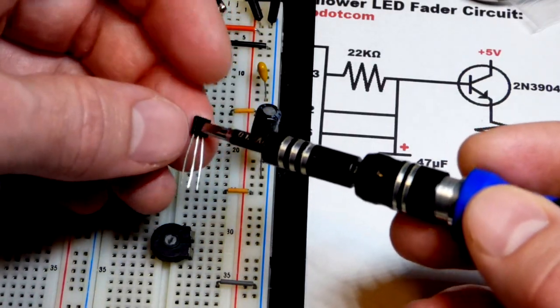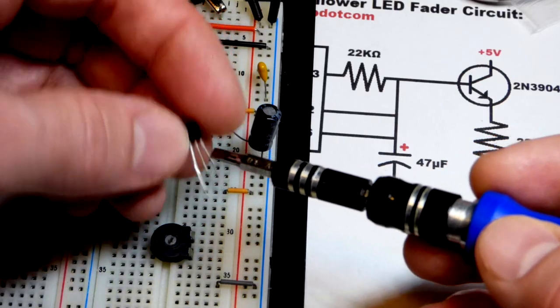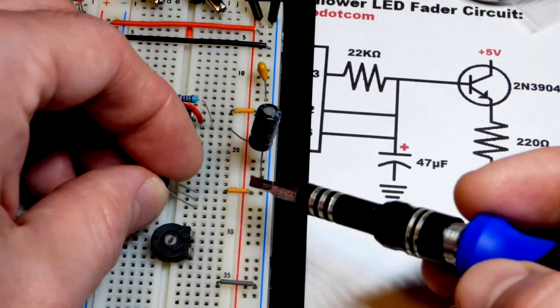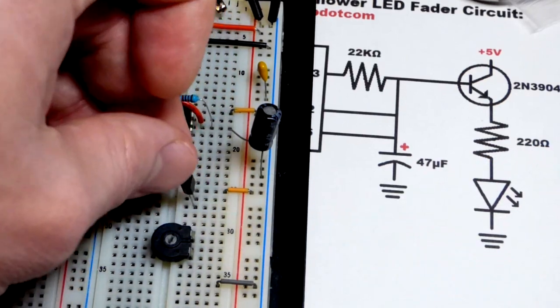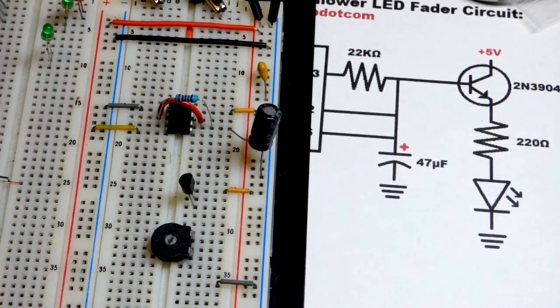I have this orange jumper here going to the positive rail. As you can see the collector, looking at the flat side, that's the flat side facing us, we have the emitter, base, collector. If I turn it this way, collector is to that jumper right there.